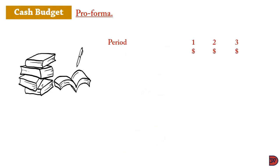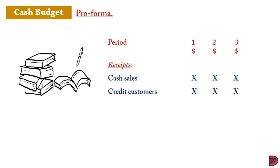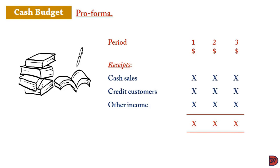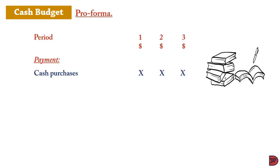You start with a period, then the receipts. Cash sales are listed here. If you have credit customers paying for previous periods, you enter it in the year that you receive the payment — this is cash, not profit. Any other income is also recorded in the period it is received, not the period you were entitled to it. Then you get your total receipts.